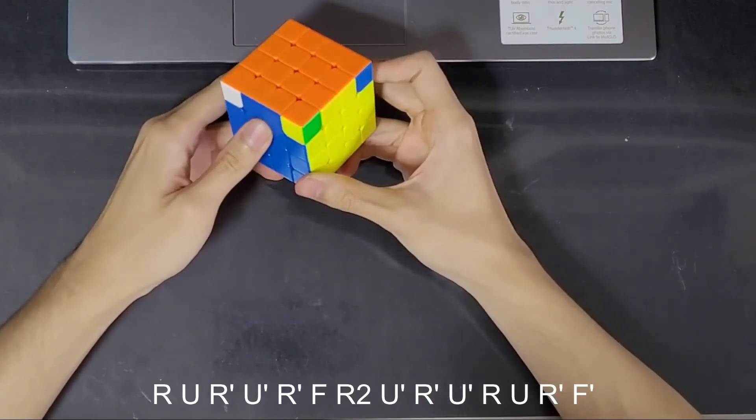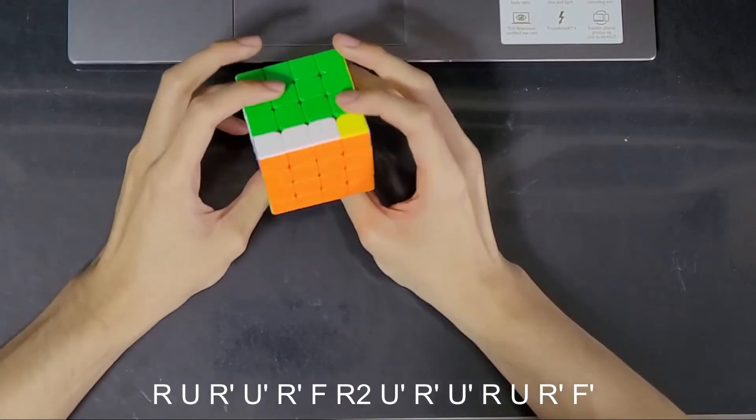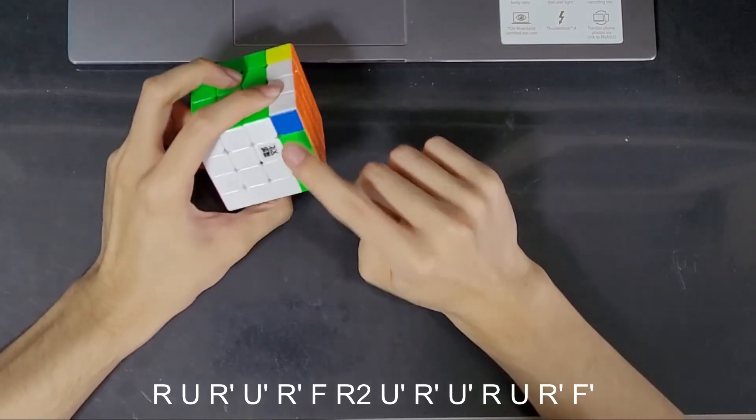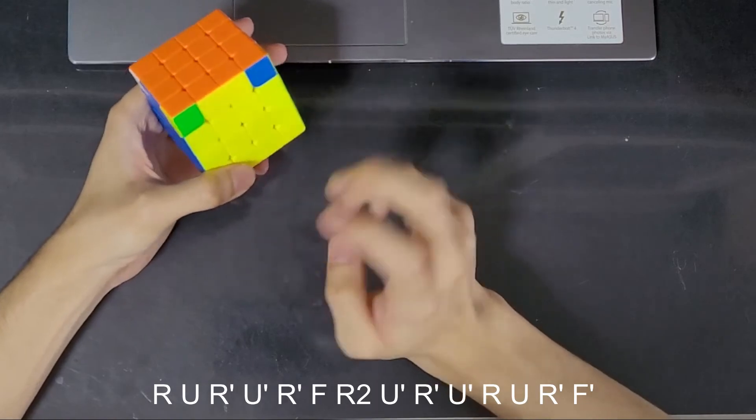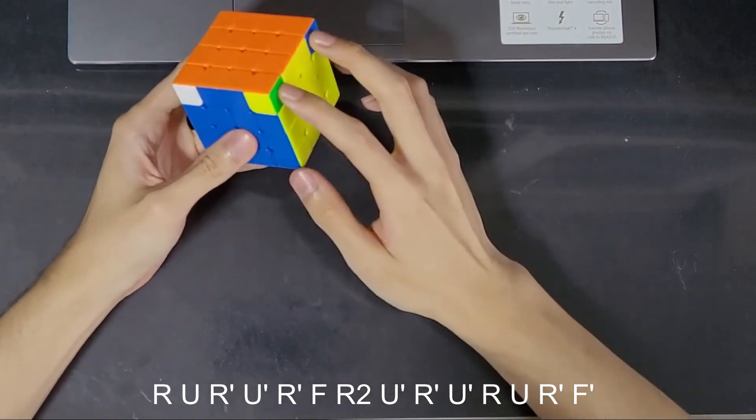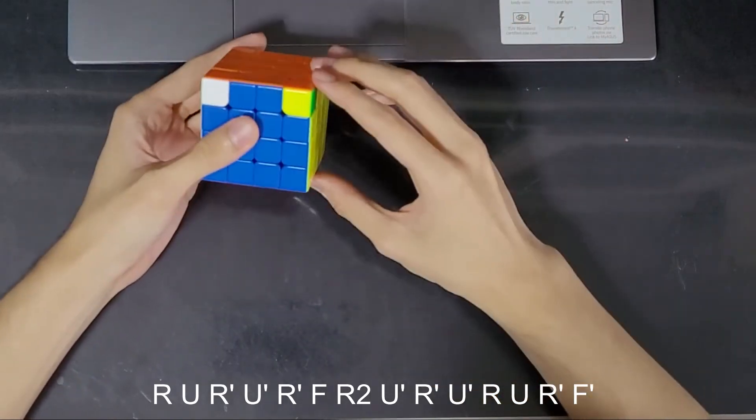The next step is going to solve all the corners. And in this case we have a diagonal corner swap. You can tell by having every sticker here is a different color. We don't have a single pair that is the same color on both sides. So we just do this algorithm from any angle.